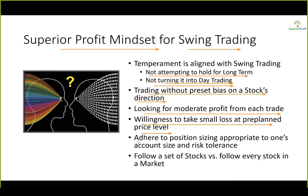Another essential characteristic for swing traders is to adhere to strict position sizing. One should risk only, say, 2% of one's account size in each trade. That means if 5 swing trades are open at a time, the maximum risk to the account is 10%. That is our standard guideline. If somebody is new to stock trading, one may risk only 1% of account size in each trade. This allows us to trade without fear and with confidence.